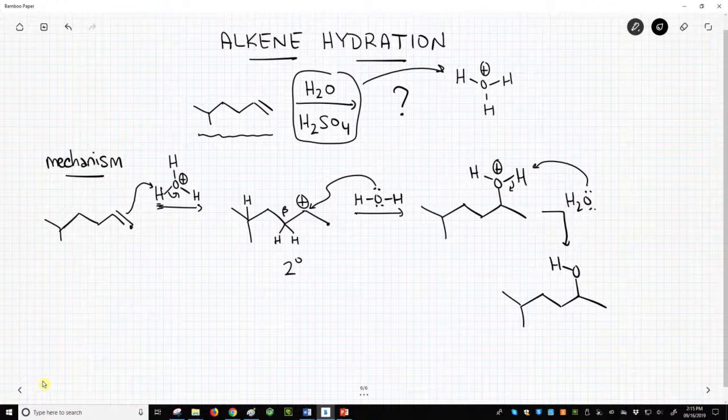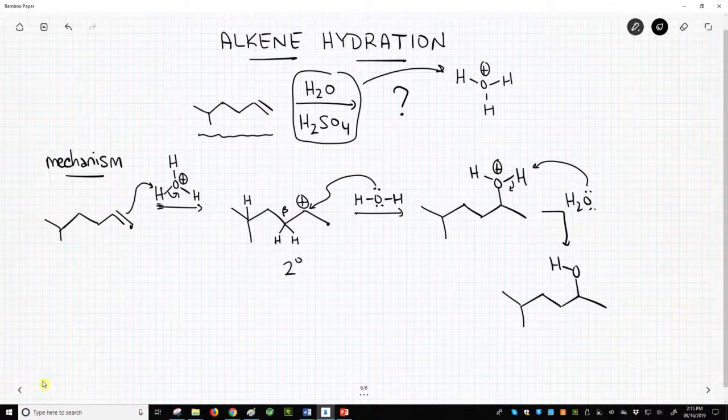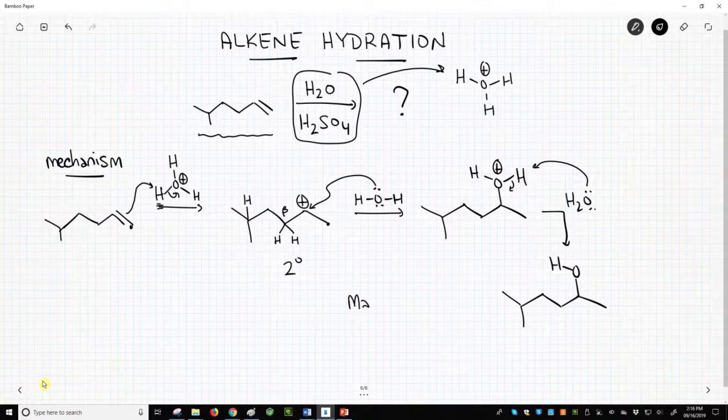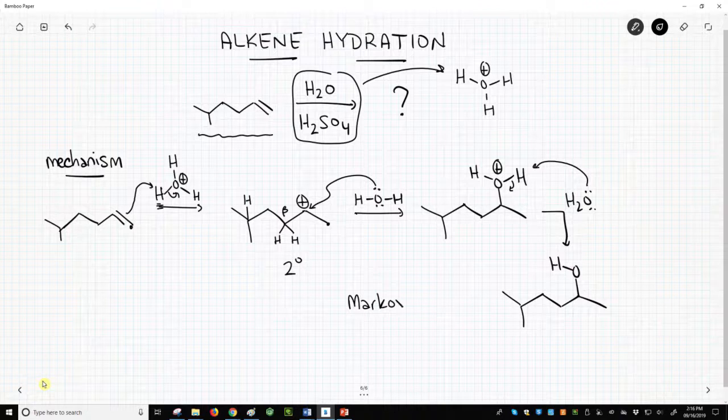The product with the OH group on the more highly substituted carbon of the former alkene is the Markovnikov product. It's often called the Markovnikov alcohol because we made an alcohol functional group.